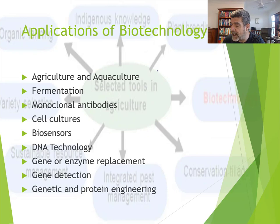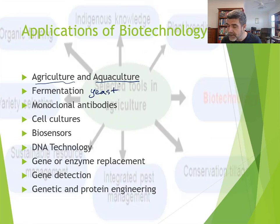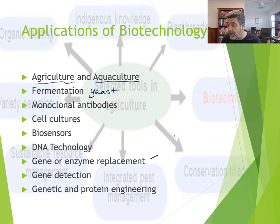I mentioned domestication, and here in Australia we have a long history of agriculture and aquaculture, with First Nations people who managed the land in a sustainable way. We also include in biotechnology the fermentation of alcohols — that can include bread making with yeast. Other applications include monoclonal antibodies, cell cultures, biosensors, and DNA technology. We'll have a look at gene and enzyme replacements, involving specific types of enzyme production, including human insulin production, which will also link into our discussion around genetic and protein engineering.